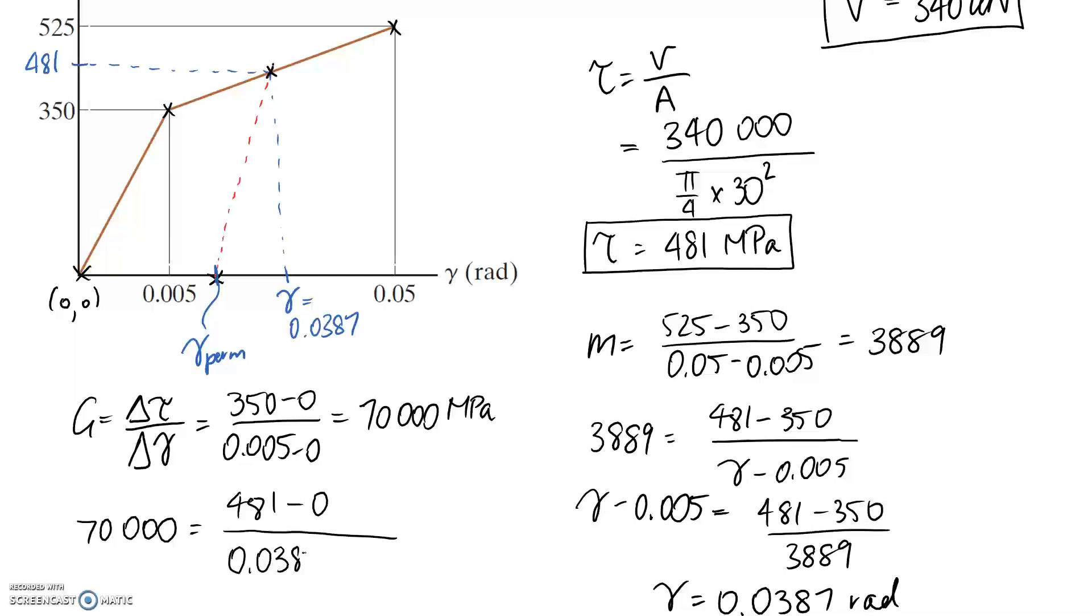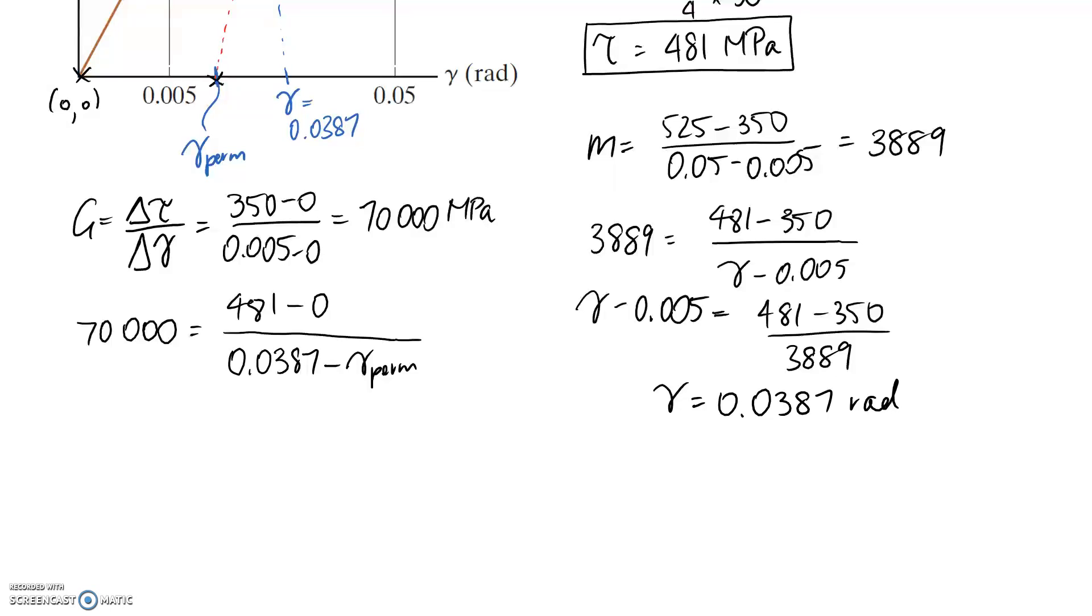Now it's just a case of rearranging for it. So if I multiply this up to the top line and divide this down to the bottom line, our permanent deformation is going to be equal to 0.0387 minus 481 on 70,000, and that comes out to be 0.0318 radians. Okay, so that's the answer to that question, and see you in another video.